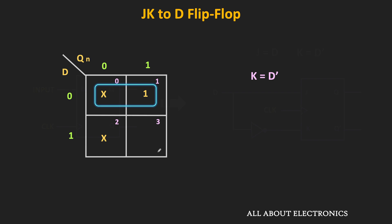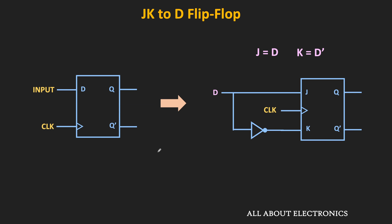So J = D and K = D̄. That means using one NOT gate, we can convert the JK flip-flop into the D flip-flop.